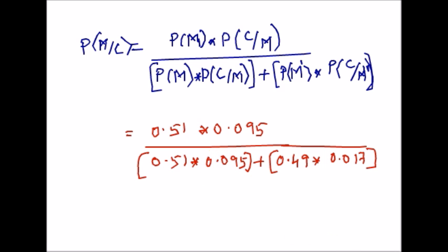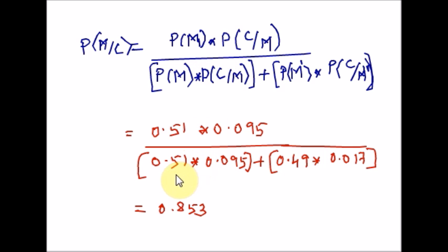Before we knew that the survey subject smoked a cigar, there was a 0.51 probability — 51% — that the survey subject is male. However, after learning that the subject smoked a cigar, we revise the probability to 0.853. So there is an 85.3% probability that the cigar-smoking respondent is a male. This makes sense because the likelihood of being male increases dramatically with the additional information that the subject smokes a cigar, since so many more males smoke cigars than females.